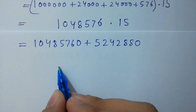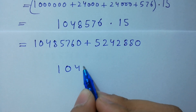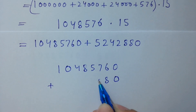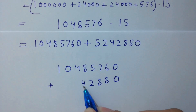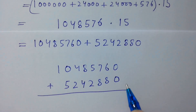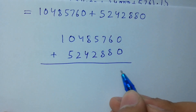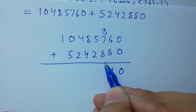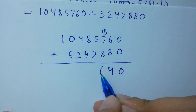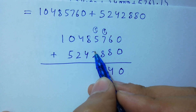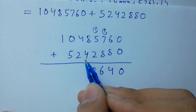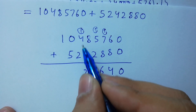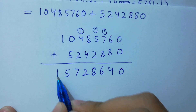Next step, I am going to add: 1, 0, 4, 8, 5, 7, 6, 0 and 0, 8, 8, 2, 4, 2, 5. Adding them: 0 plus 0 is 0; 6 plus 8 is 14, write 4 carry 1; 8 plus 7 is 15, plus 1 is 16, write 6 carry 1; 5 plus 2 is 7, plus 1 is 8; 8 plus 4 is 12, write 2 carry 1; 4 plus 2 is 6, plus 1 is 7; 0 plus 5 is 5; and 1 as it is.